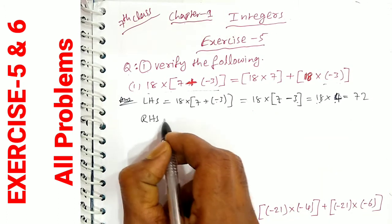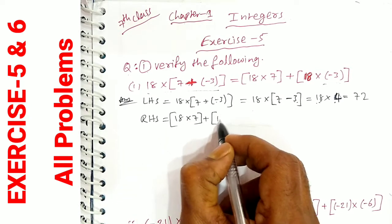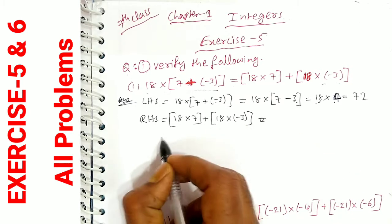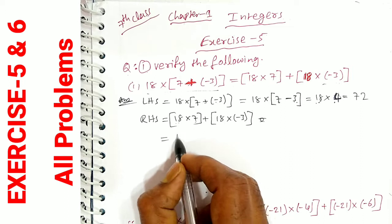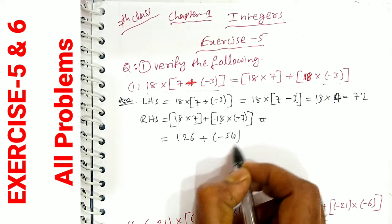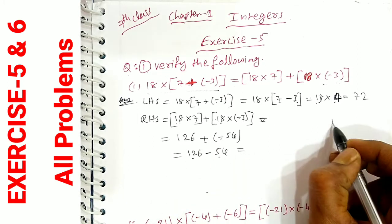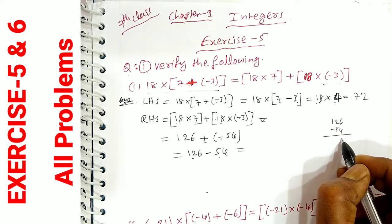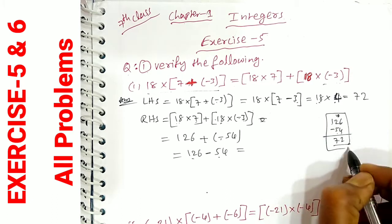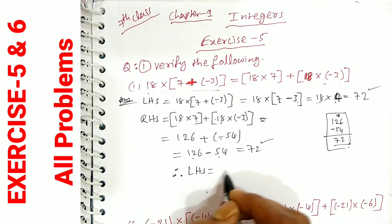Next, RHS. RHS is 18 into 7 plus 18 into minus 3. So we have 18 into 7 equals 126. Plus, plus into minus gives minus, so 18 into 3 is 54, giving minus 54. So 126 plus minus 54 equals 126 minus 54. 6 minus 4 is 2, 12 minus 5 is 7. So RHS equals 72. Therefore, LHS is equal to RHS.